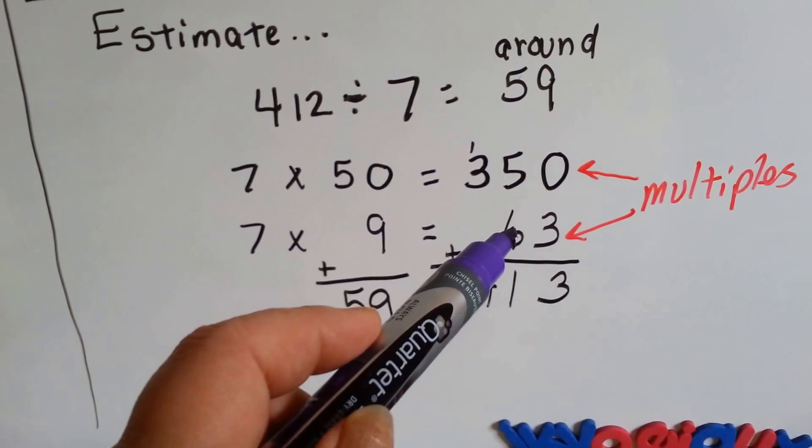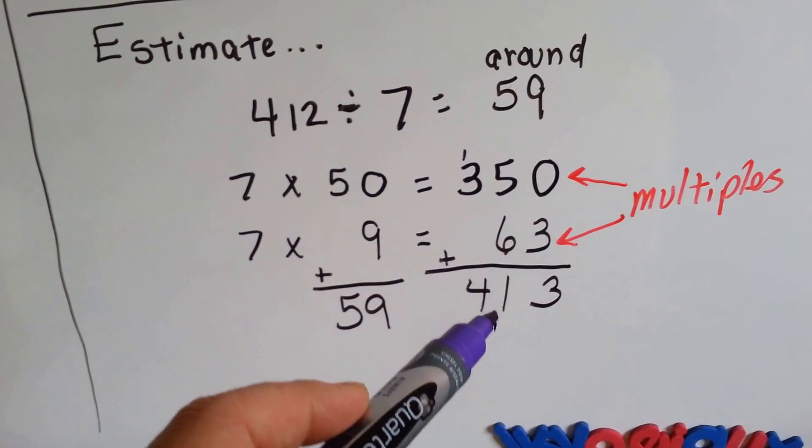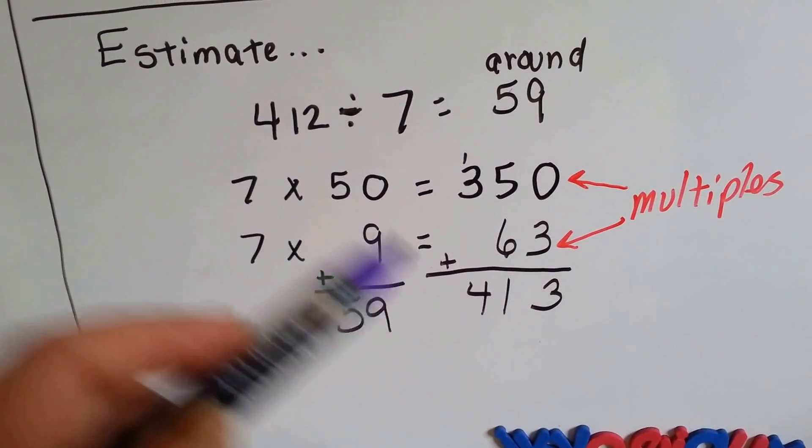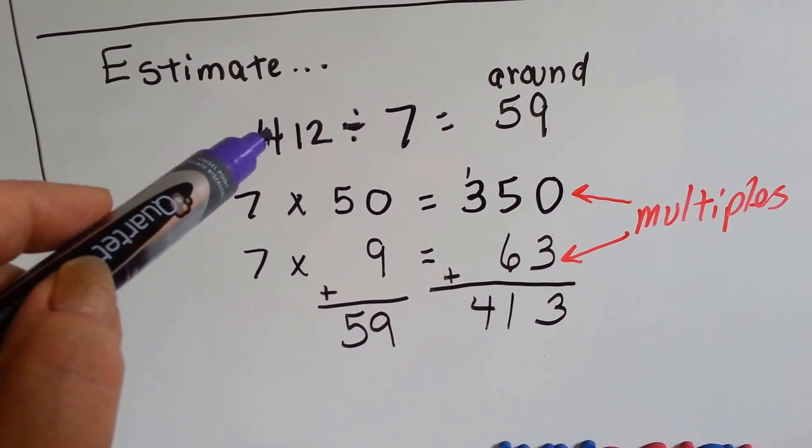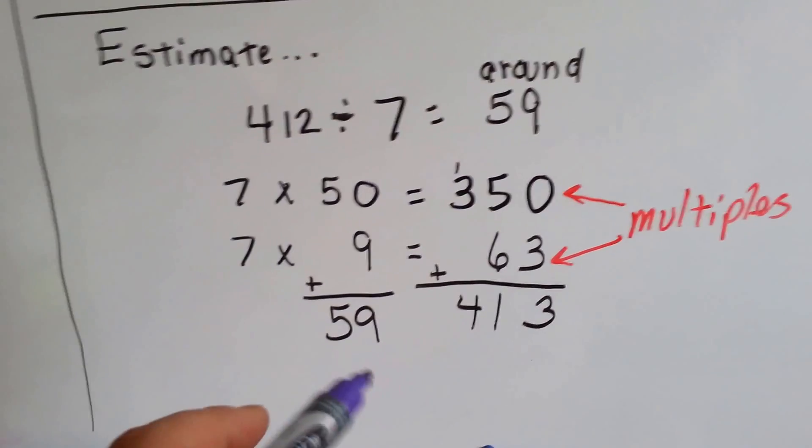7 times 9 is 63. If we add 350 plus 63, we're going to get 413. That's really close to 412. So, we could say 58 or 59.